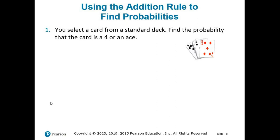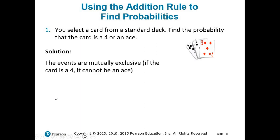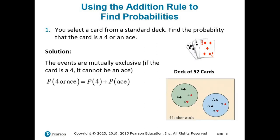Using the simplified addition rule, the probability of drawing a 4 or an ace is the probability of drawing a 4 — 4 over 52, because there are 4 fours out of 52 cards — plus the probability of drawing an ace, also 4 over 52. So 4/52 plus 4/52 equals 8/52, or about 0.15.